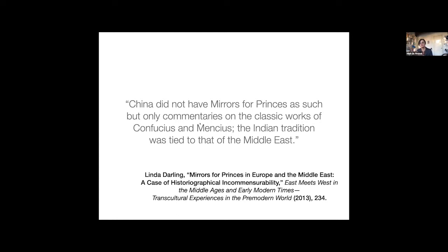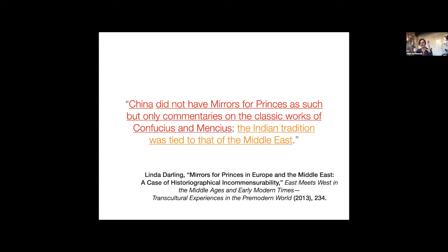I noticed there was an evolving comparative literature on this. I don't want to single out any one person as the bad example, but here's a common perception of what the field of comparative political advice literature currently looks like. It says 'China did not have mirrors for princes as such, but only commentaries on the classic works of Confucius.' The Indian tradition was tied to that of the Middle East. I think just about every part of that sentence should raise an alarm to those of us who work on pre-20th century Chinese humanities.